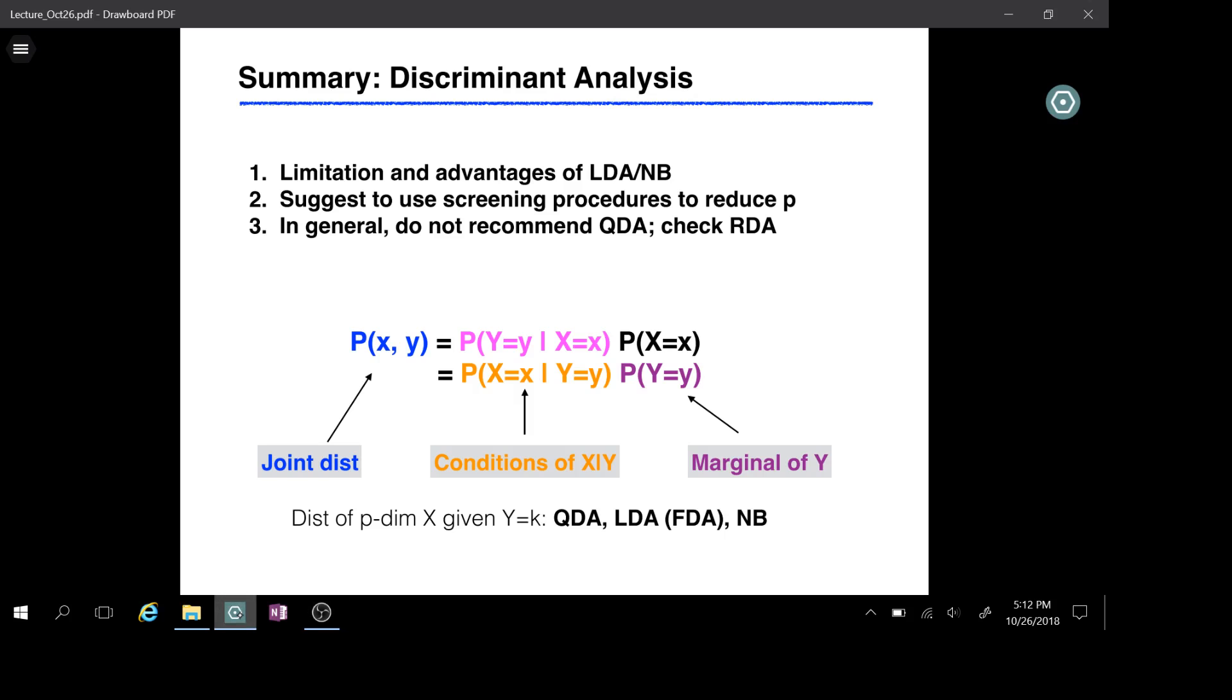Previously we finished discriminant analysis and ended our lecture with discussion on the limitations of DA. Today I want to review those limitations but also talk about some advantages of the procedures we learned. In addition, I will discuss some procedures for LDA or Naive Bayes or QDA when the dimension is high.